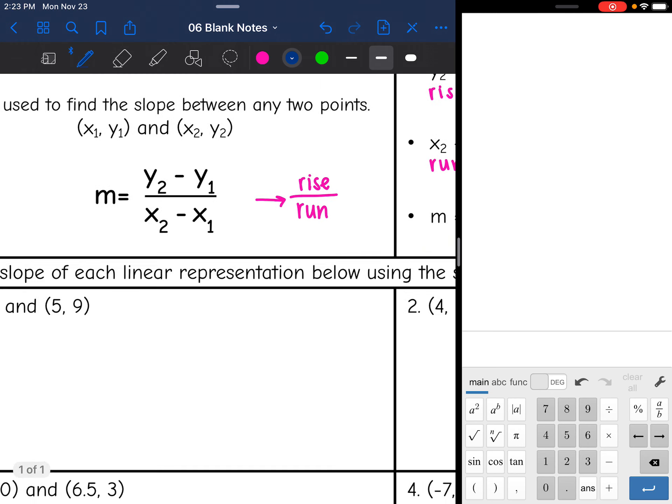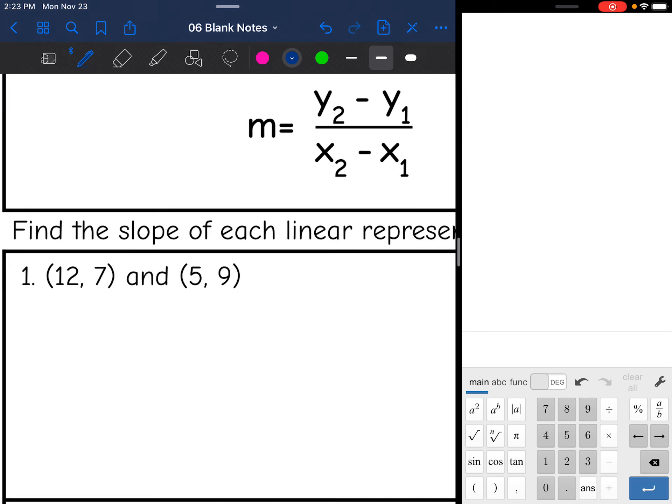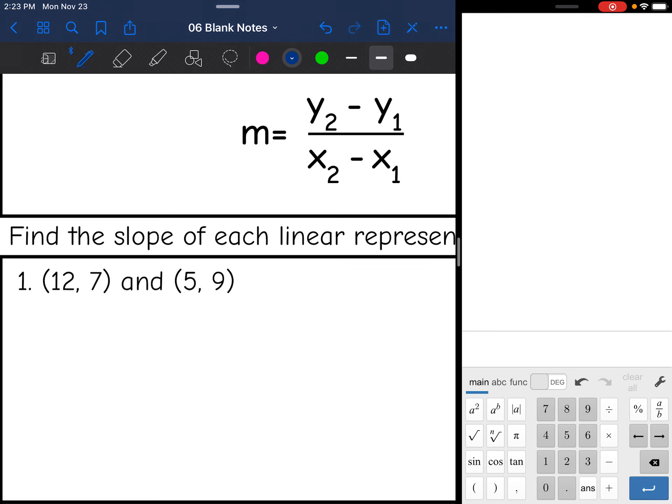Okay, let's practice using the formula to find the slope between two points now without the graph. So the first thing I would do whenever you're learning this formula is labeling your points. So this is my first ordered pair. I'm going to label it x1, y1, x2, y2. And now I'm going to plug into the formula. I'm going to do y2 minus y1 on top. So 9 minus 7 divided by x2 minus x1. So 5 minus 12.